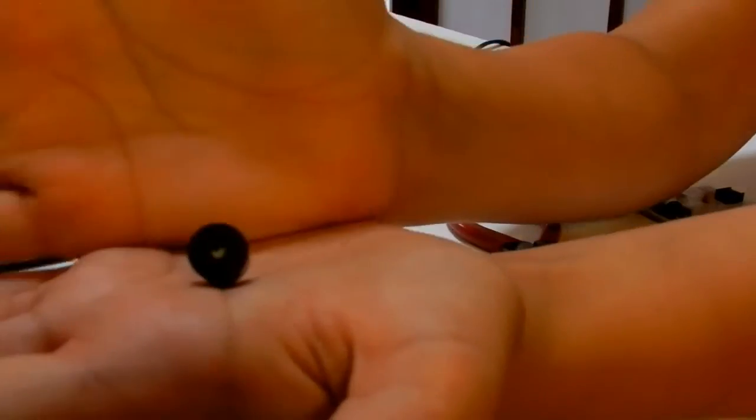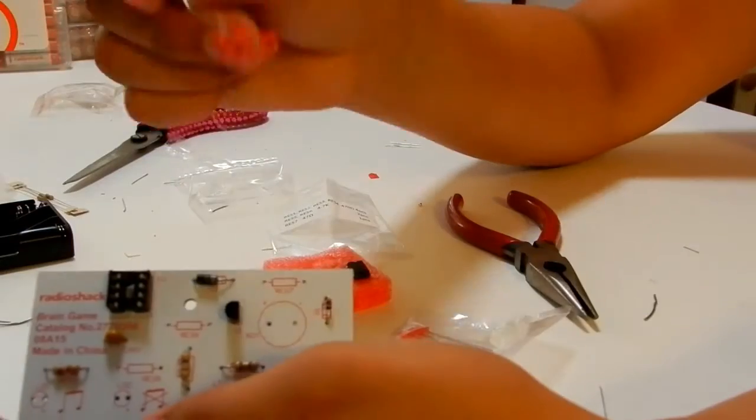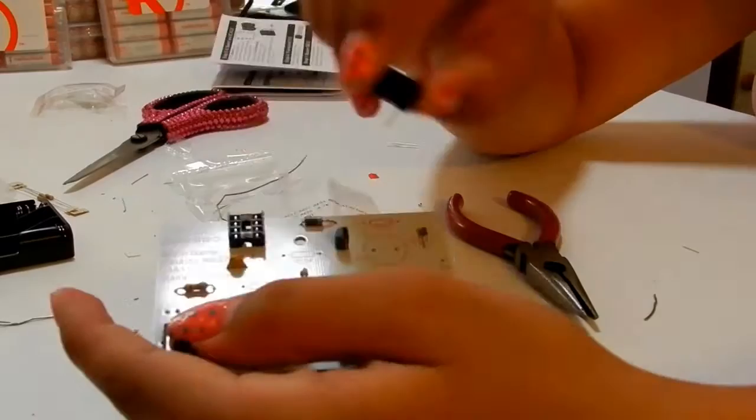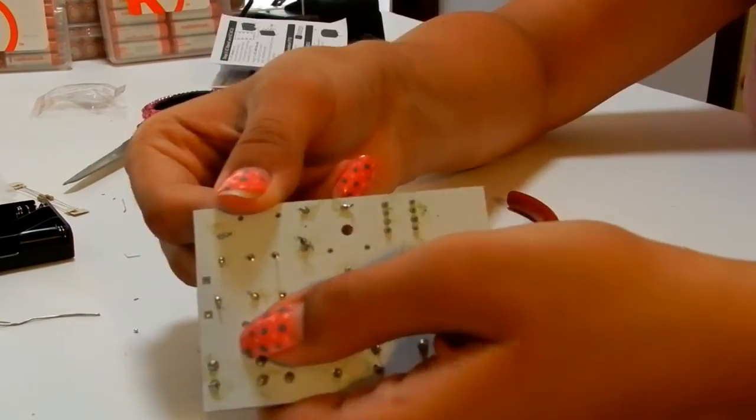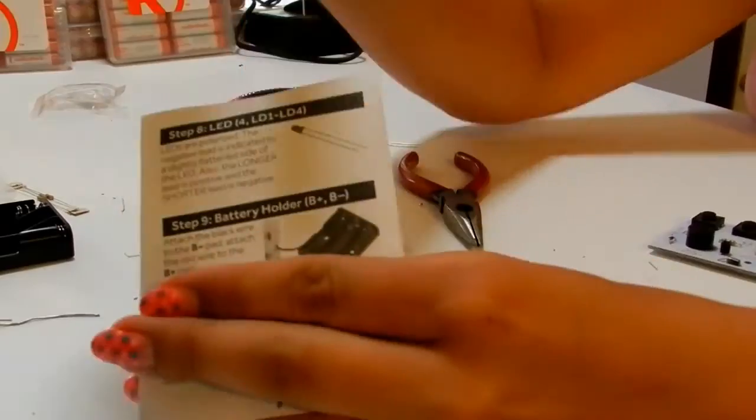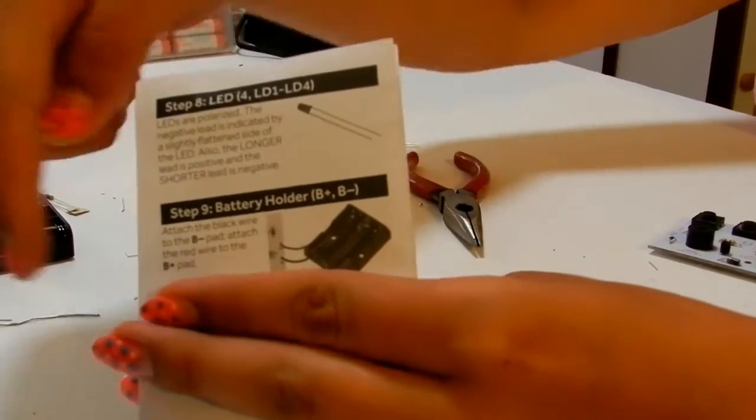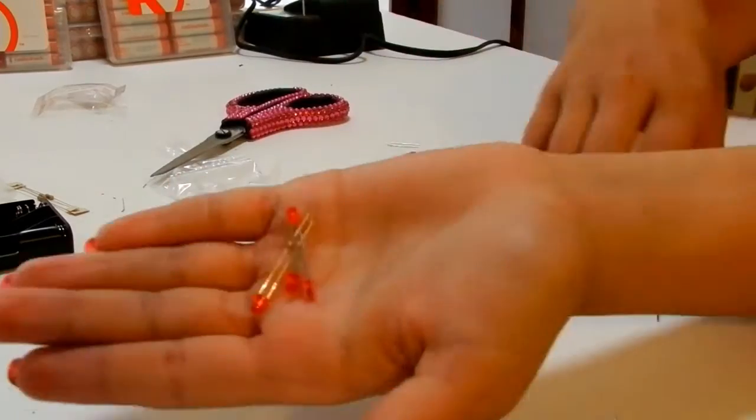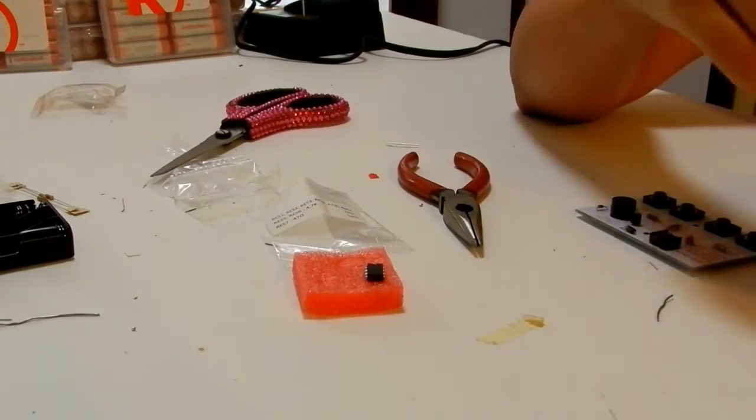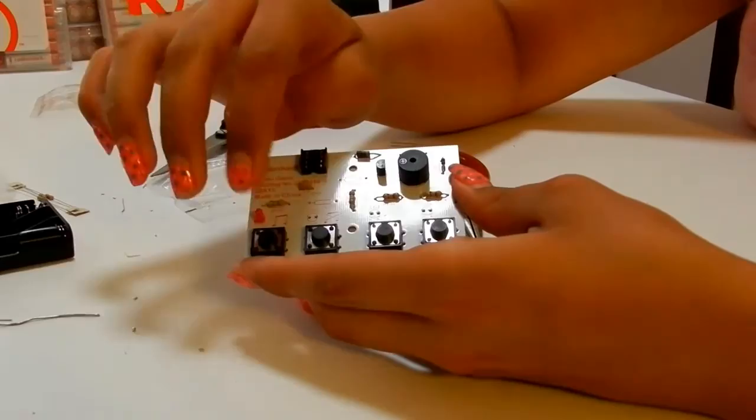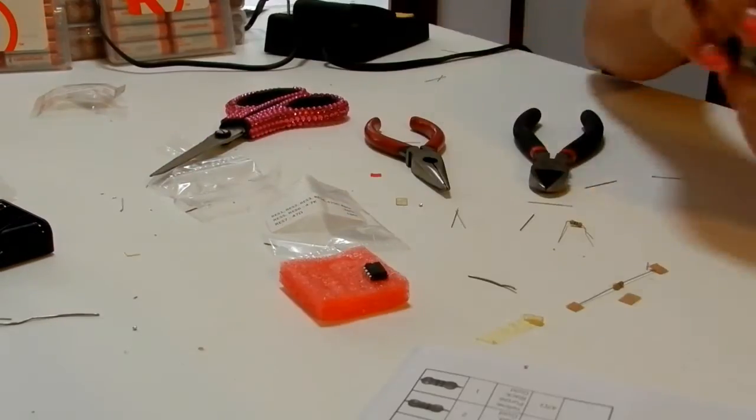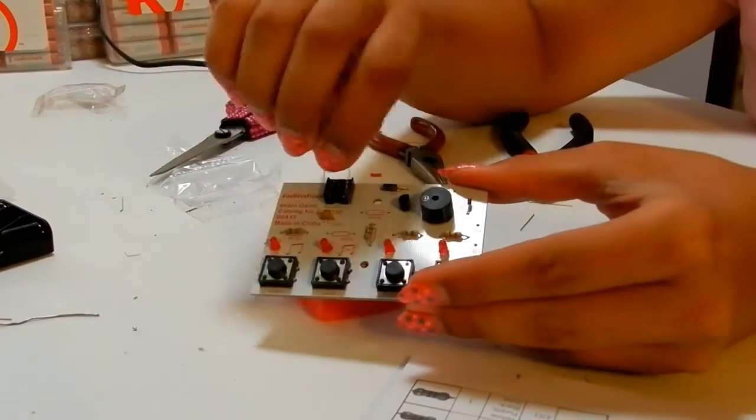So, now to the buzzer. The buzzer will make the sound and make your experience better whenever you're playing the brain game. So, there's a little dot on the buzzer and that dot is the positive side. You're going to match up the dot and the positive side with the positive circle. So, now the LEDs. The LEDs, the longer lead is the positive lead and the shorter lead is the negative lead. So, you're going to want to match that up with the thing on there because it's polarized.